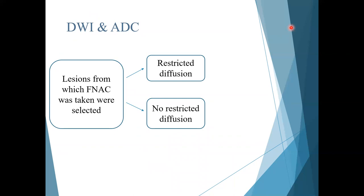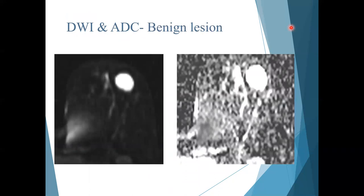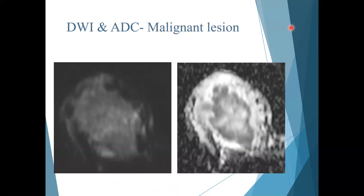DWI and ADC sequences were taken in patients having breast lesions, and the lesions from which FNAC was taken were selected for analysis. Lesions which showed restricted diffusion were considered malignant, and lesions which showed no restricted diffusion were considered benign. This is a DWI image and its corresponding ADC image of a benign lesion showing no restricted diffusion. This is a DWI and its corresponding ADC image where the breast lesion in the right breast shows restricted diffusion, suggestive of malignant etiology.